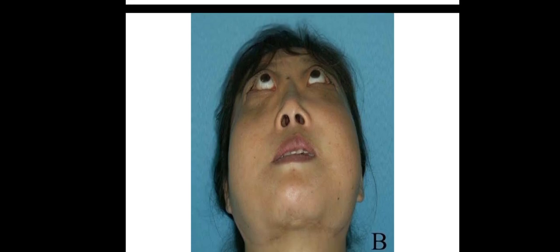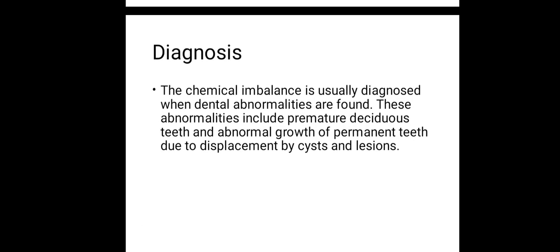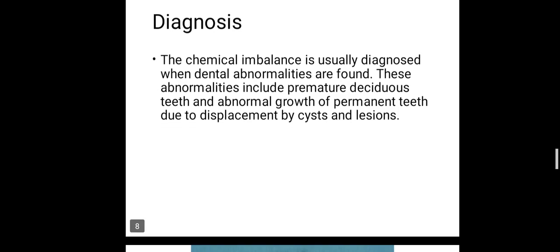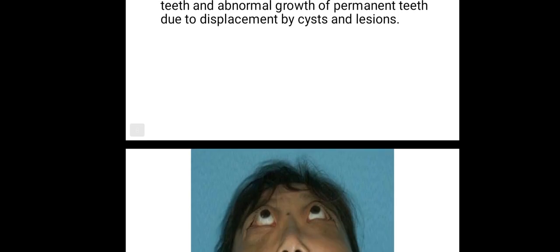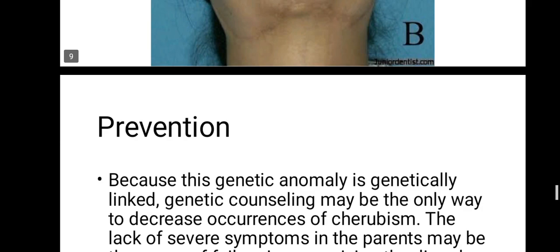For diagnosis, cherubism is usually diagnosed when dental abnormalities are found. These abnormalities include issues with deciduous and permanent teeth, and abnormal growth of permanent teeth due to displacement by cysts and lesions.